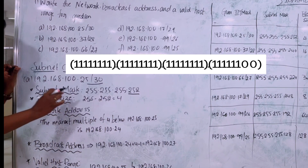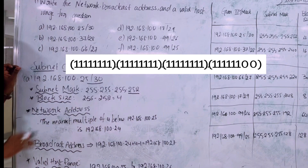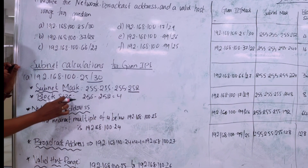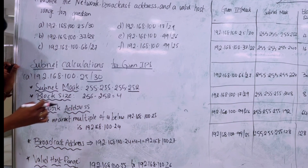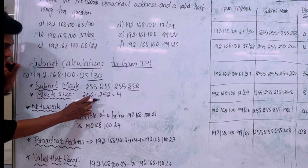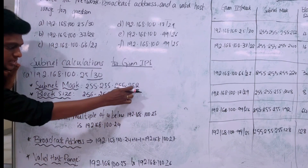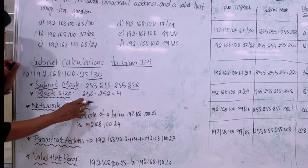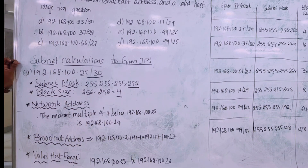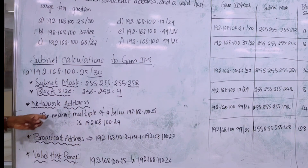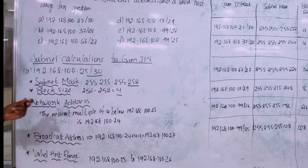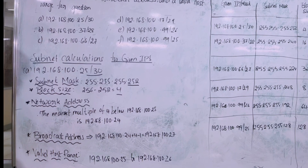Next, we calculate the block size. The block size is identified by 256 minus the subnet mask value. So 256 minus 252 gives us a block size of 4.